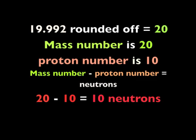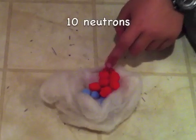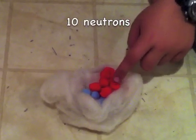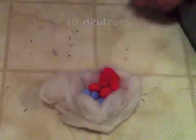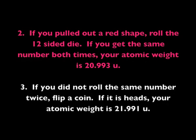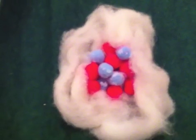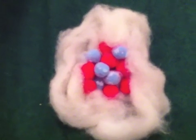Then you subtract the number of protons you have from this mass number — twenty minus ten equals ten neutrons. If you had pulled out a red shape, there would be two more steps you could take to find out if you had a different number of neutrons. You might need these two steps if you make your own neon. So now we're going to close that up.